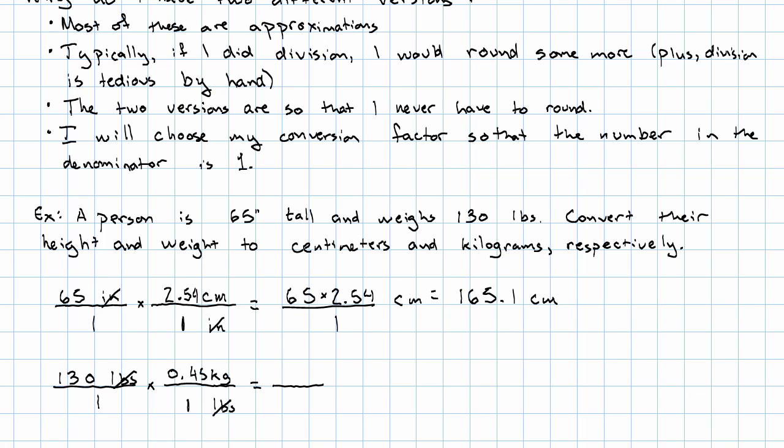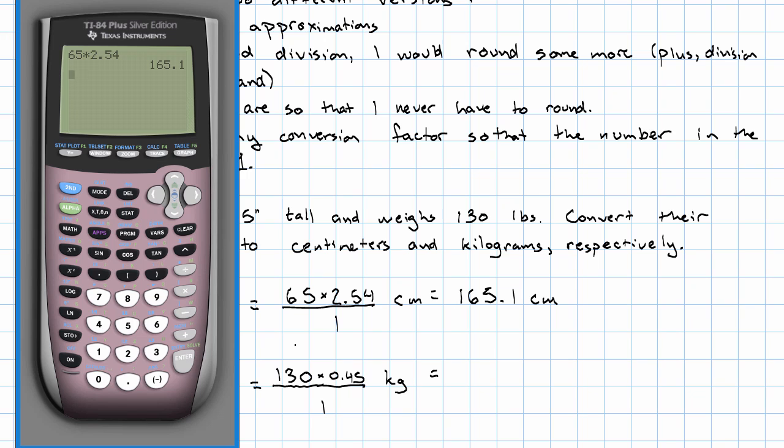Pounds cancel out. And I'm left with 130 times 0.45 over 1 kilograms. So, on the calculator again, 130 times 0.45 is 58.5 kilograms.